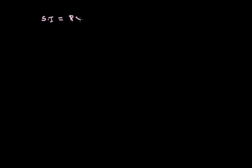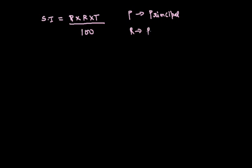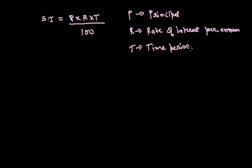On last turn, we studied the formula to calculate simple interest, that is SI = P into R into T upon 100, where P is the principal, R is the rate of interest per annum, T is the time period, and SI is the simple interest.